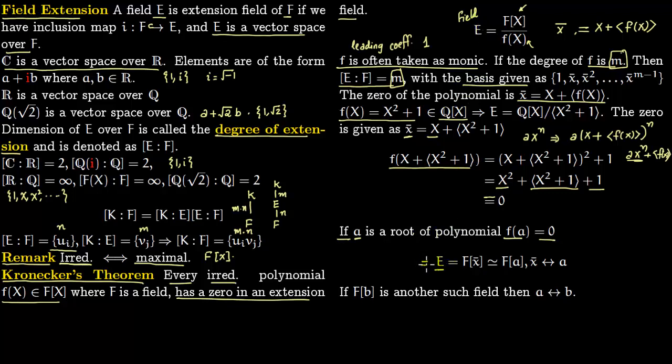This is given as F[X] and you modulo out the ideal generated by your irreducible polynomial. This you write as F[X̄]. This will be isomorphic to F[a], and this isomorphism is constructed by just sending X̄ to a and a to X̄.